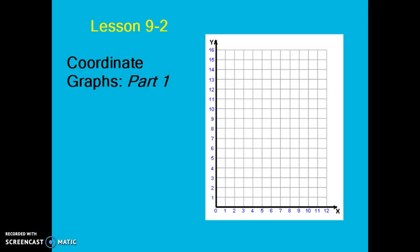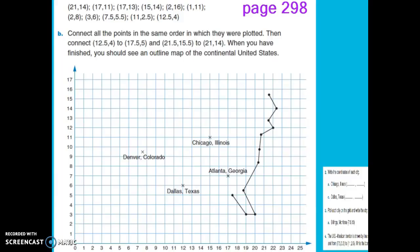In lesson 9-2 we're continuing to work on coordinate graphs. We're going to take a look at an activity on page 298 of your math journal and we'll be plotting some points that are listed here to complete the picture below.